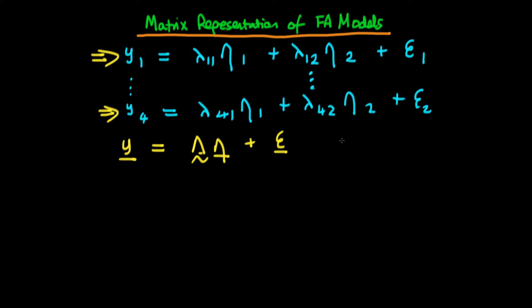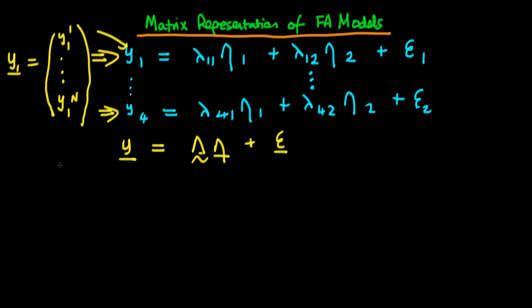The main problem is that each component of our dependent variable here really represents a vector of dependent variables. For the case of Y1, essentially Y1 is a vector of each observation for each individual — we have a value of Y1 for the first individual all the way through to the value of Y1 for the nth individual. We've kind of implicitly forgotten about the fact that Y1 through Y4, as well as some of the other terms in our model, really represent vectors. So we'd like a way of writing down our model which allows us to keep that information.